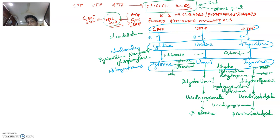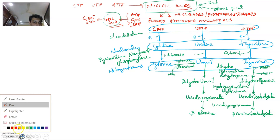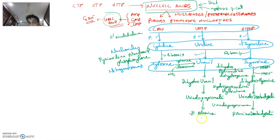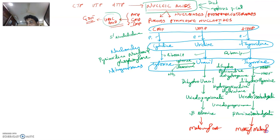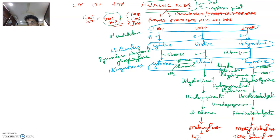Finally, beta-alanine gets converted to malonyl-CoA, and beta-aminoisobutyrate gets converted to methylmalonyl-CoA, which finally gets converted to succinyl-CoA and enters the TCA cycle. Malonyl-CoA goes into fatty acid synthesis.